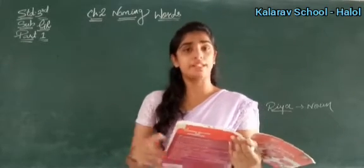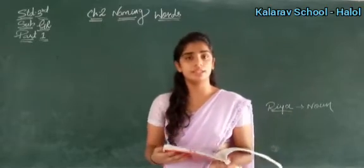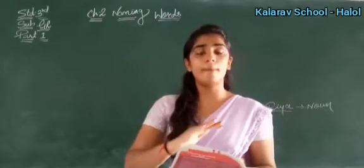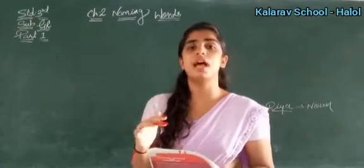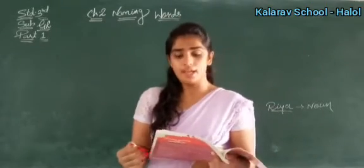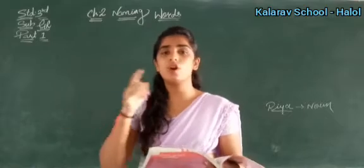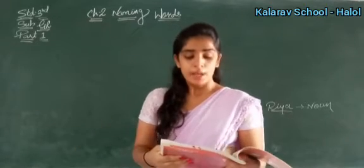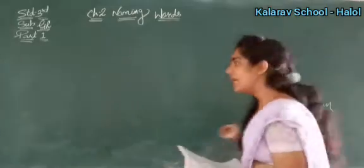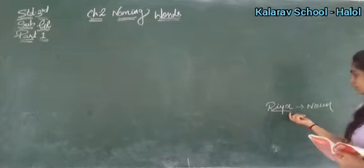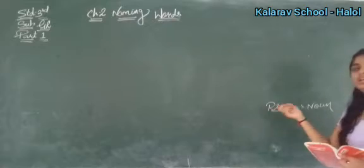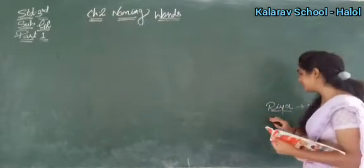Then there are names of rivers, and pet animals — pets means jo hum ghar mein rakh sakte hain, jaise puppy, which is the young one of a dog. Next is month — January, February — and the names of days. These all are proper nouns. Proper nouns always begin with a capital letter, even in the middle of a sentence, like 'Rhea is a girl' — Rhea ka first letter capital hoga.